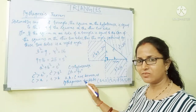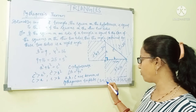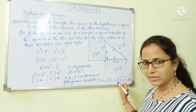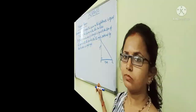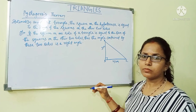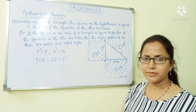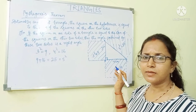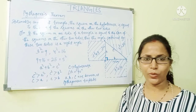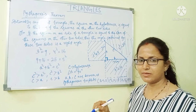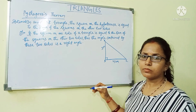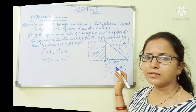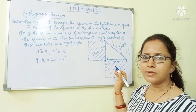Our Pythagorean triplets are 3, 4, 5 and 5, 12, 13. The remaining concepts will be discussed in the next video. Subscribe to my channel and press the bell icon so that you will get notifications of my new uploads. If you understood all the concepts, like my video and share with your friends. Thank you.